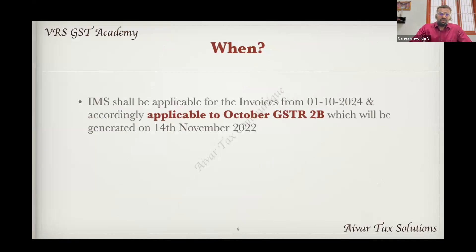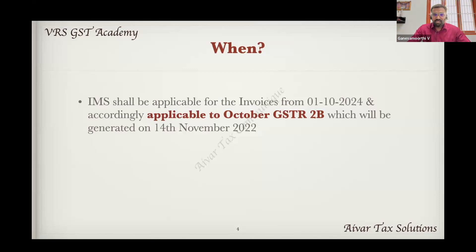Which invoice is applicable? That is the invoice management system. In October 2024, there are invoices starting from 1st October 2024. That is the type of invoices on the 14th November 2024. So on the 14th November 2024, you can replace this. Now, IMS is enabled in the GST portal. So if you have all the invoices in October, you can check to accept, reject, and then you can access. Now, that is optional.